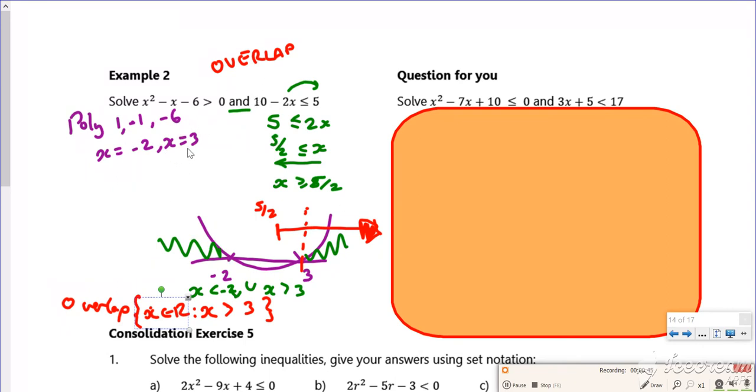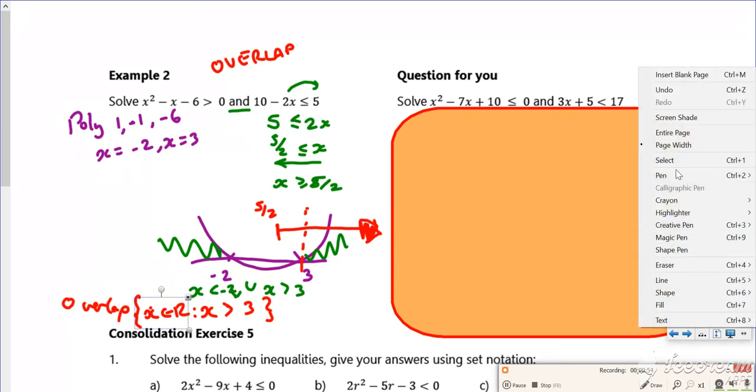So just to remind you, I did the U-shape curve, then I did the linear bit and I just saw where they both worked together and they both worked from 3 onwards. There's one there for you to have a go at and then we're done now.